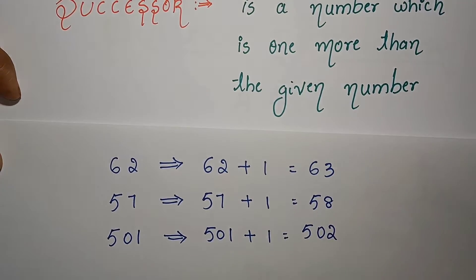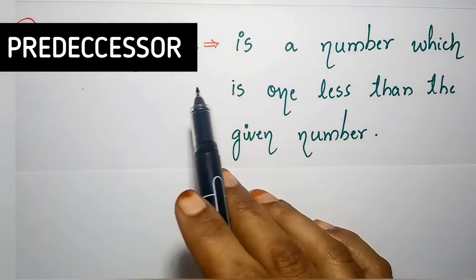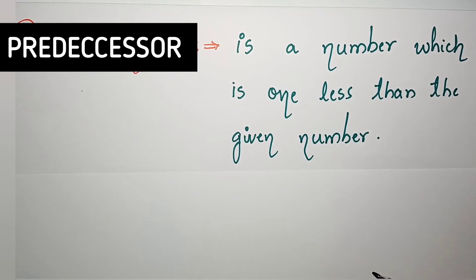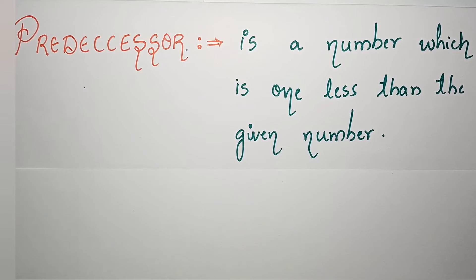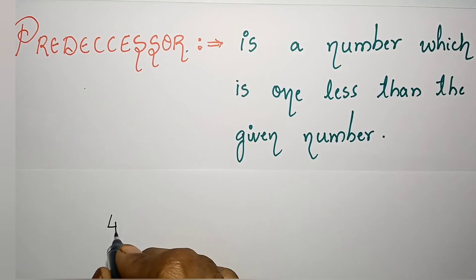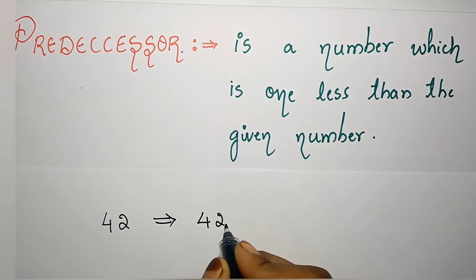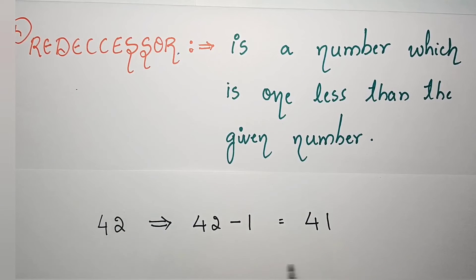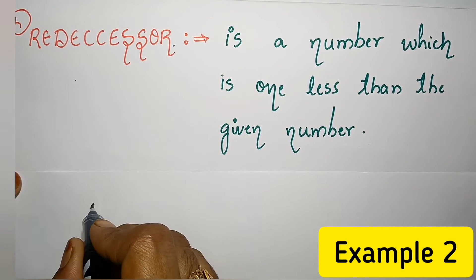Now, what is predecessor of a number? Predecessor is a number which is one less than the given number — yani diye gaye number se ek kam. Suppose you have to find predecessor of 42, so what you have to do is 42 minus 1 equals to 41. Predecessor of 42 is 41.